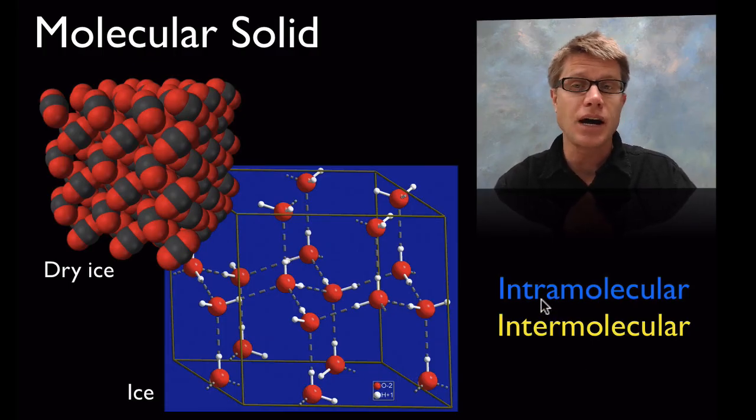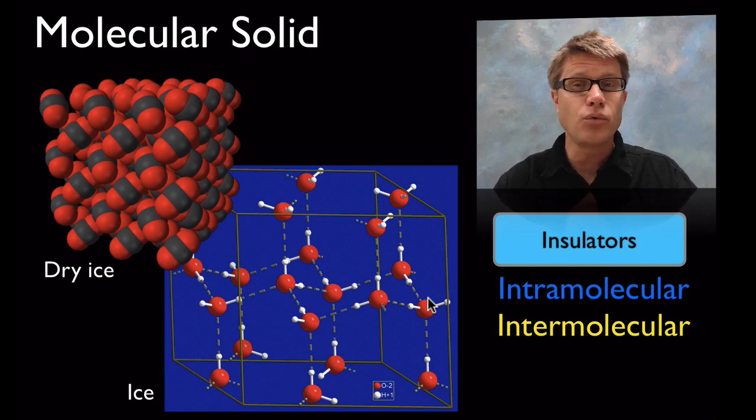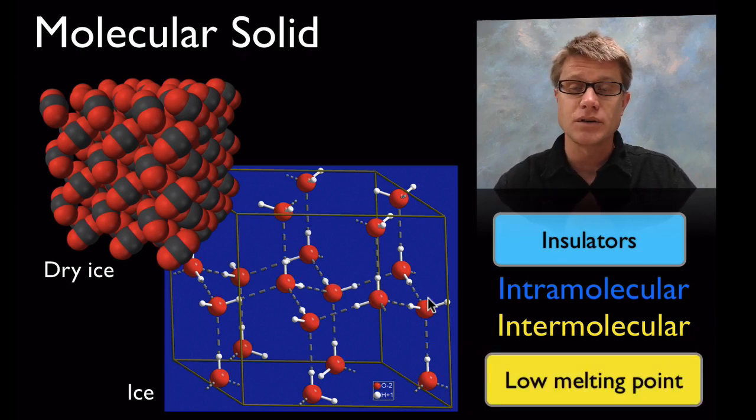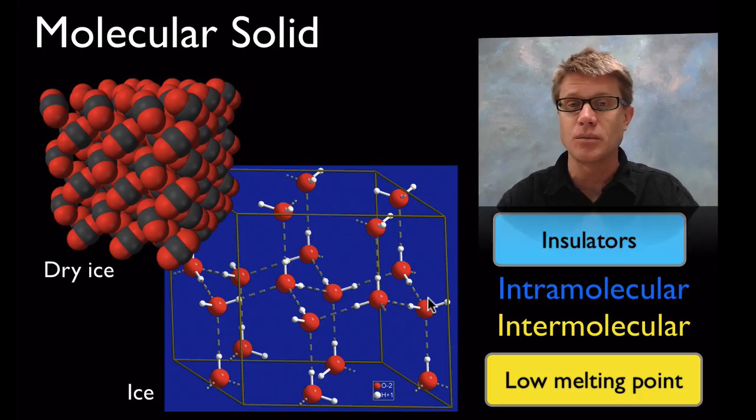As a result of these strong intramolecular forces, molecular solids are insulators. They hold onto electrons, so electricity doesn't flow through them. But since they have weak intermolecular forces, they have very low melting points. Ice clearly won't remain solid at room temperature because of these weak intermolecular forces.